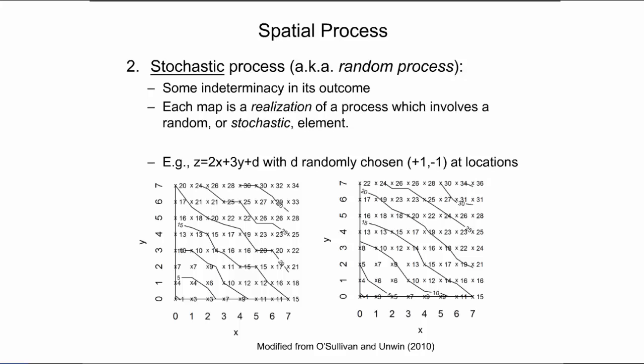As an example, we can define a slightly modified version of the process from before and compute z as 2x plus 3y plus d, where d is a randomly chosen value at each location, such as plus or minus 1. Two realizations of this process are shown in the left and right figure. As the ISO lines indicate, there is still a general rise from southwest to northeast. However, the resultant surface is not a simple plane anymore, but more complex with the direction of the steepest slope slightly deviating from the general direction at different locations. The two realizations reveal some differences in the pattern of ISO lines, which is due to the random elements involved in this spatial process.